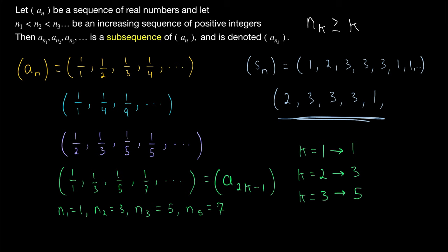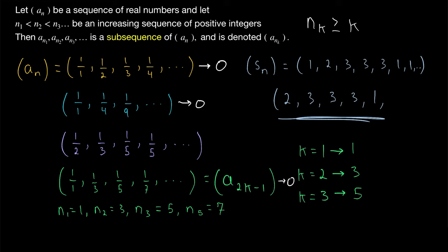Finally, notice the sequence of reciprocals of natural numbers converges to 0. Both of the subsequences we looked at also converge to 0, and that is no coincidence. The first very nice result about subsequences that we'll prove is that a sequence converges to a limit L if and only if all of its subsequences converge to that same limit L. So that's an introduction to subsequences — just talking about the abstract definition may make them seem trickier than they really are, but once we look at proofs and more concrete examples, we'll have no problem understanding them.